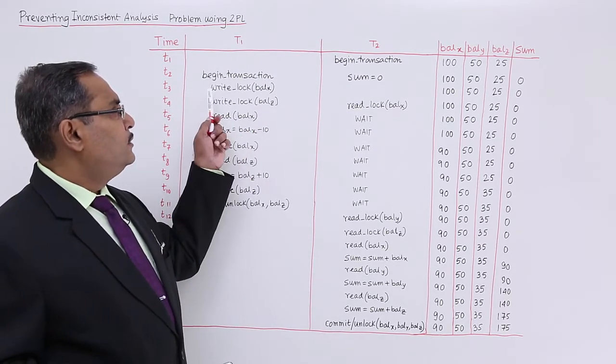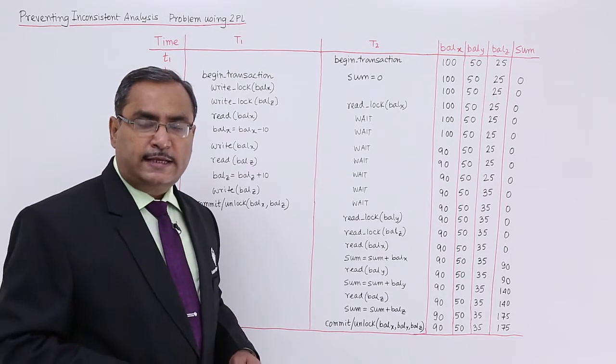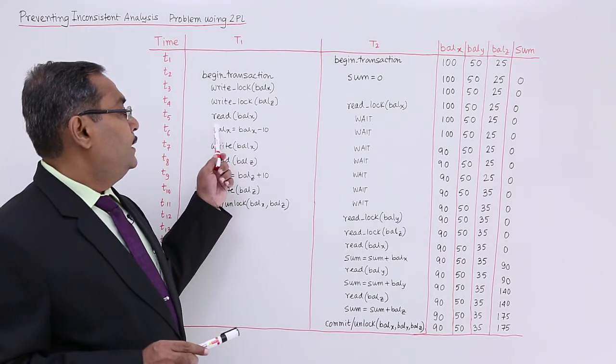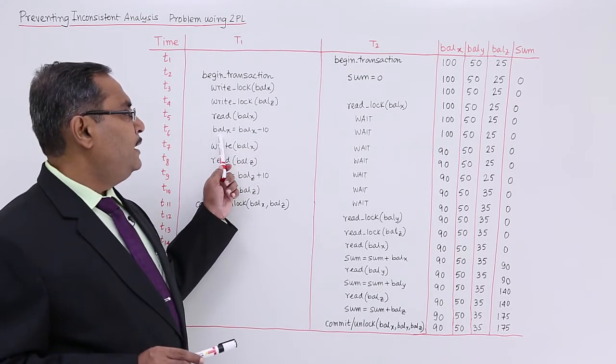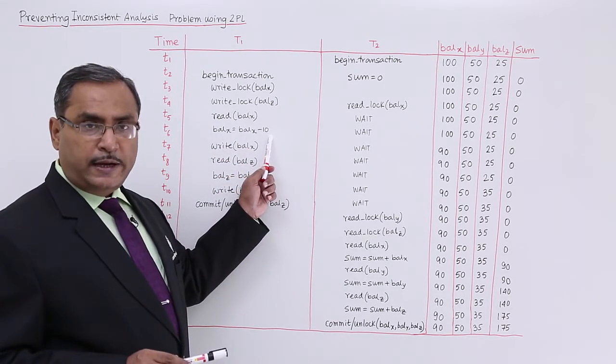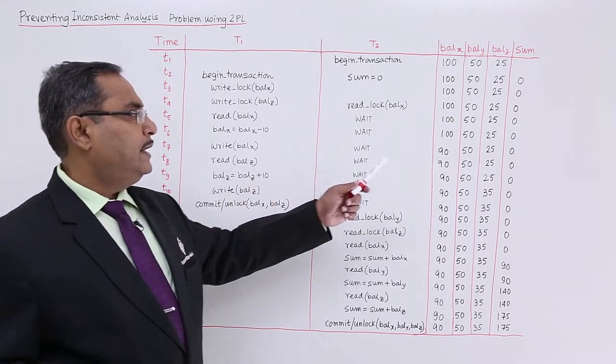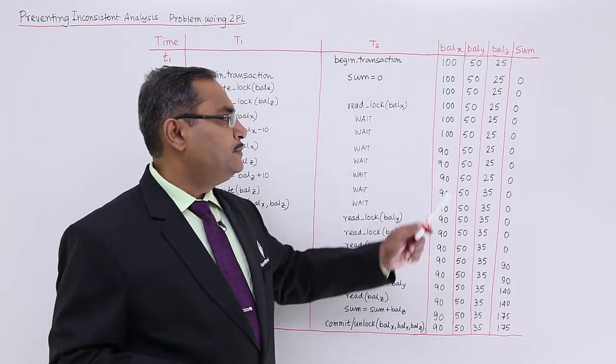Right lock balance Z. Prior to that, right lock balance X, that means it is a growing phase of the transaction T1. Read balance X. Balance X has been read, balance X has been decreased by 10, and now write balance X. Now the database will get reflected accordingly. 100 has been replaced by 90.